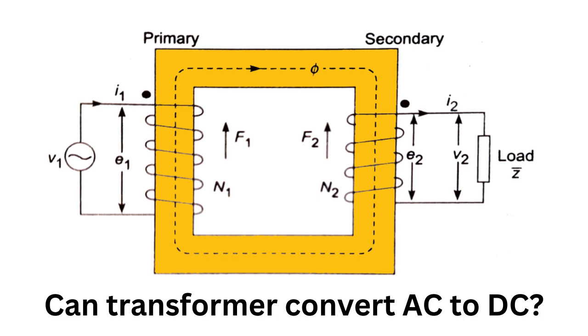One of the key differences between AC and DC is the direction in which the current flows. In AC, the current changes direction periodically, typically 60 times per second. In DC, the current flows in only one direction.